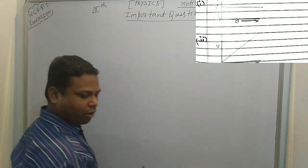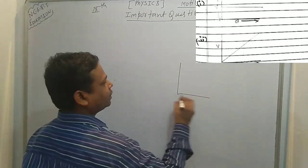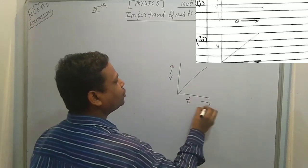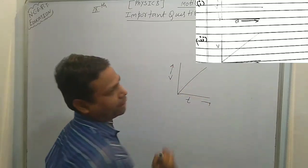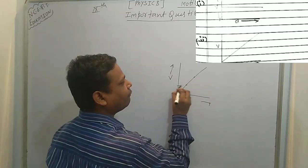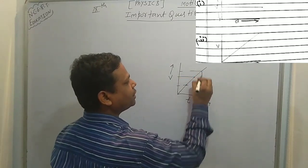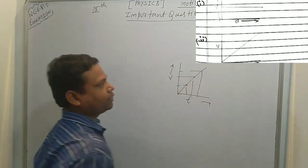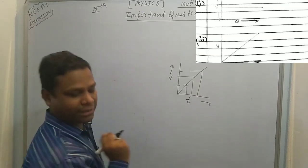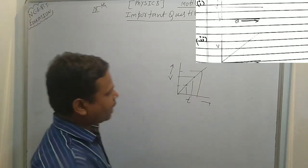Next: motion graphs. The first velocity-time graph shows uniform accelerated motion, because at every point velocity increases at a specific interval of time.